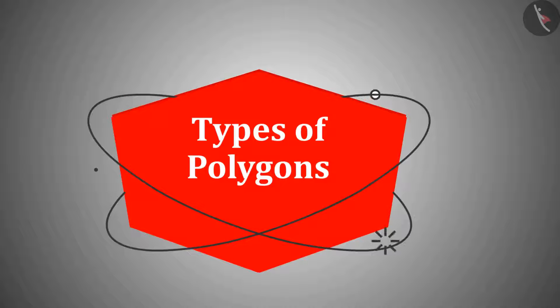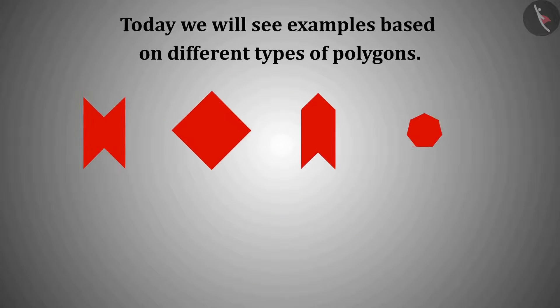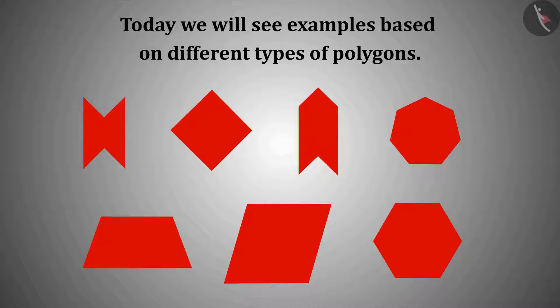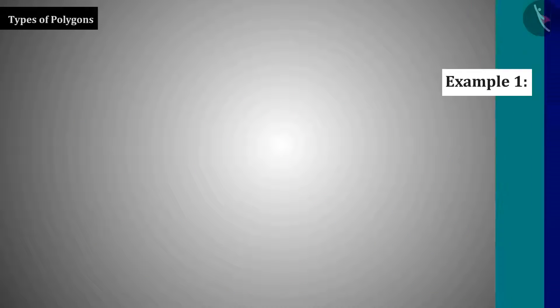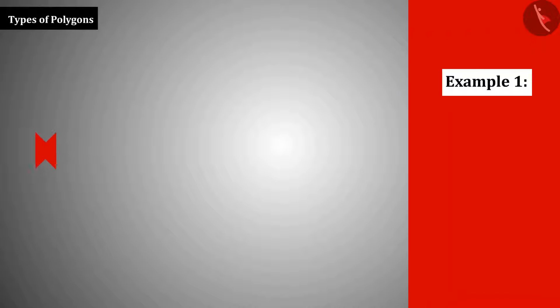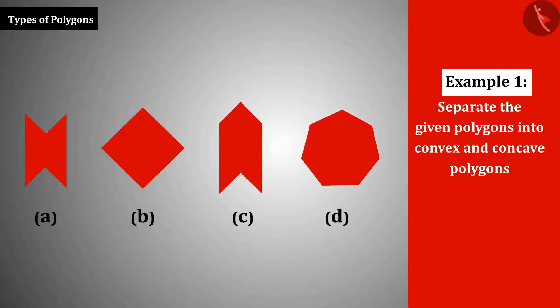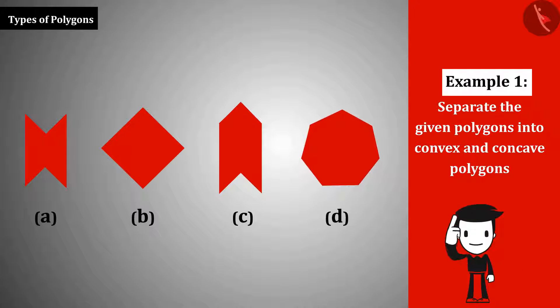Welcome to this video. Today we will see examples based on different types of polygons. Example 1: Separate the following polygons into concave and convex polygons. Pause the video to try yourself, then match the answer.